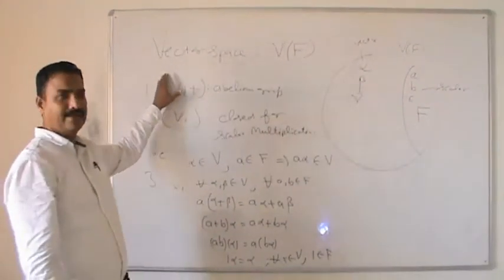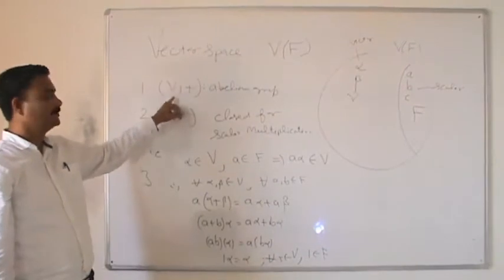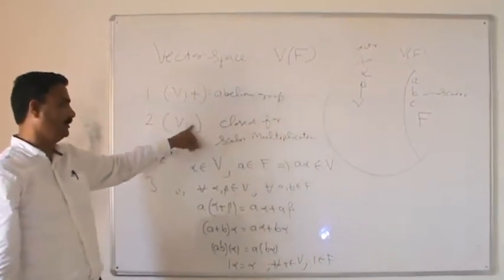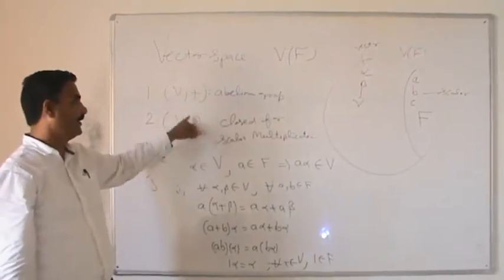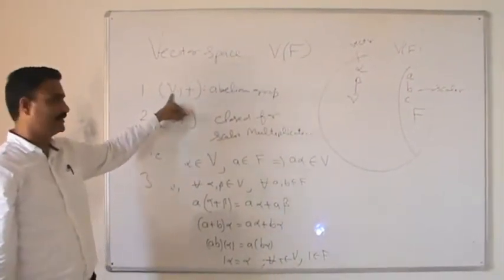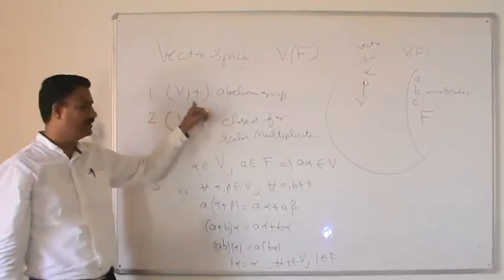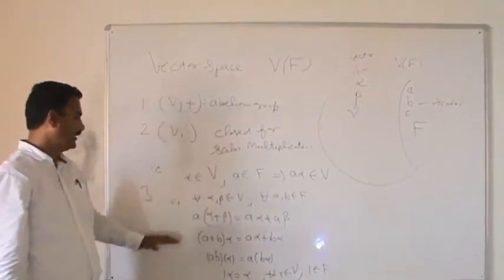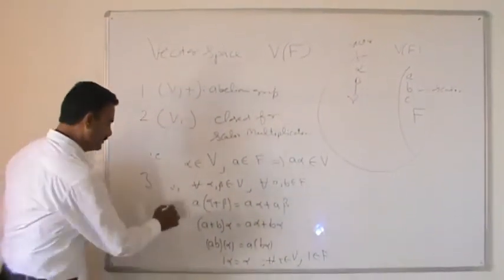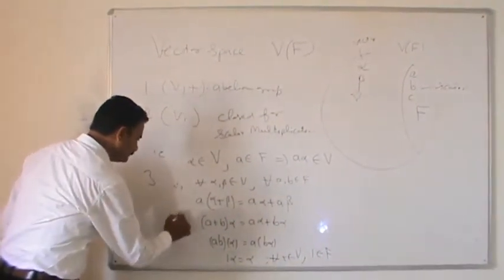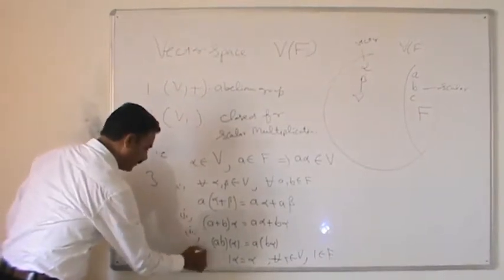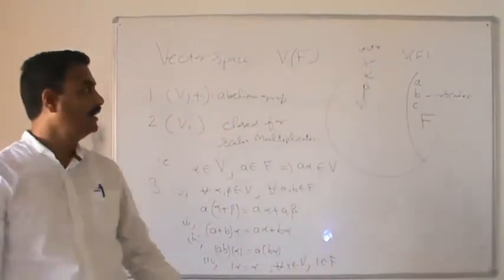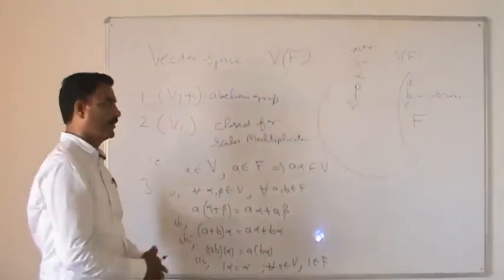So any non-empty set which possesses two compositions — one called addition of vectors and the other called scalar multiplication — and if it possesses all these properties, then such V(F) is called a vector space. Now we come to inner product space.